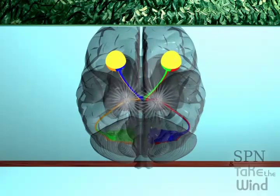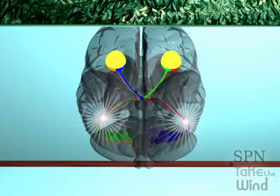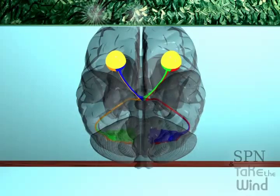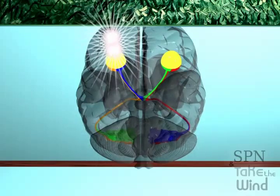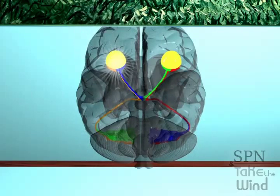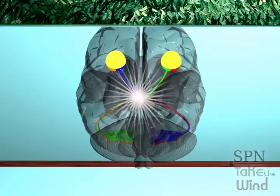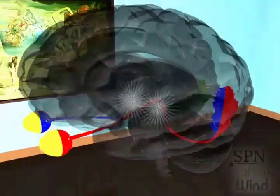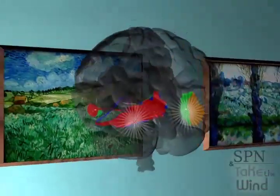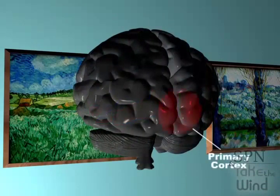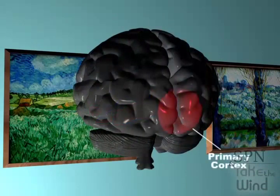Thus, each side of the brain receives visual information from both eyes. Information from the temporal part of the right visual field crosses over to the left hemisphere, and information from the temporal part of the left visual field crosses over to the right hemisphere. This is called contralaterality of vision.